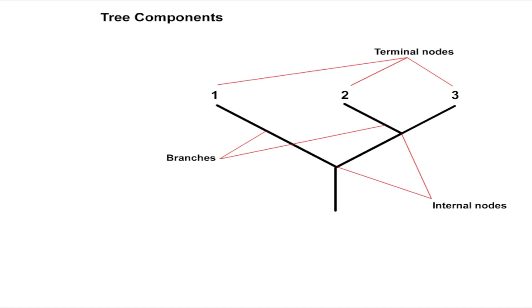Internal nodes are the branch points that represent the point in evolution where organisms at the terminal nodes diverged and represent hypothetical common ancestors for these organisms.